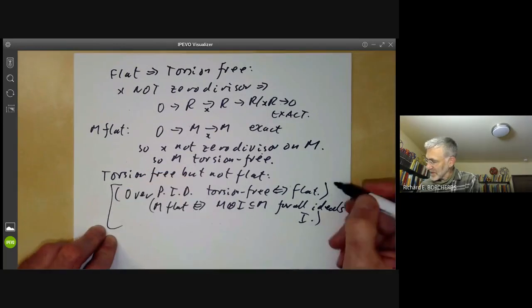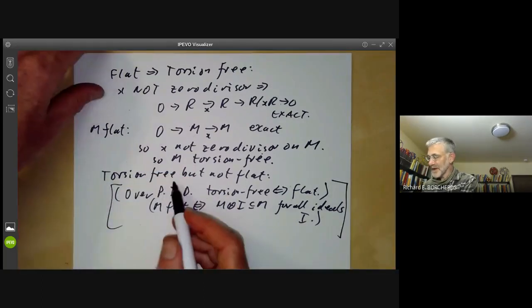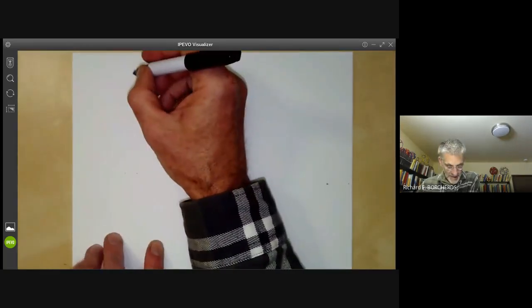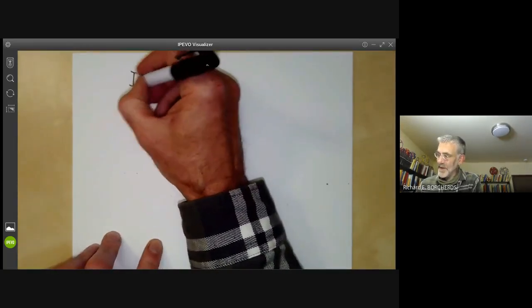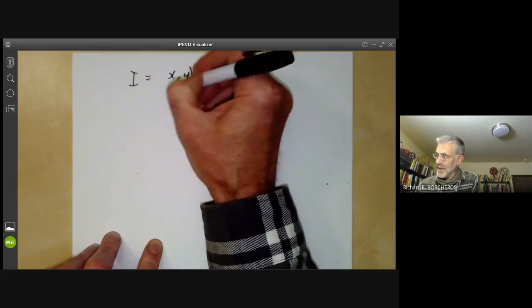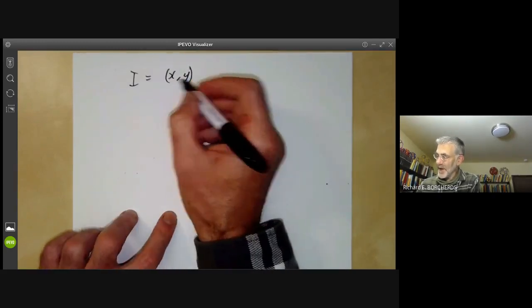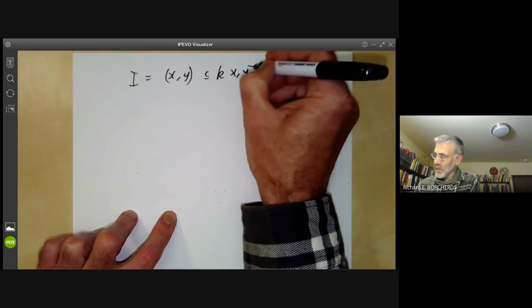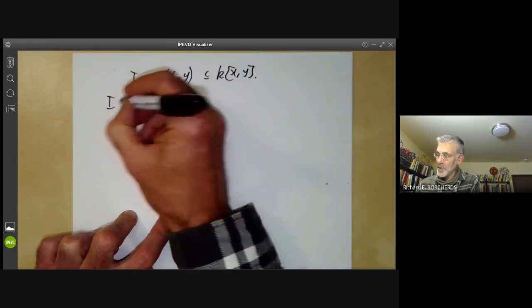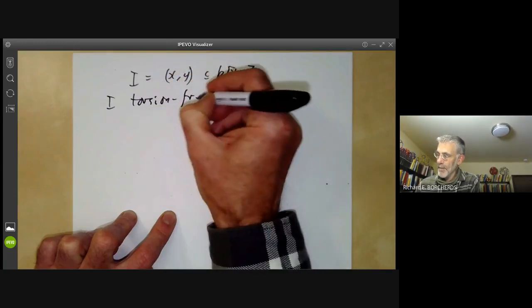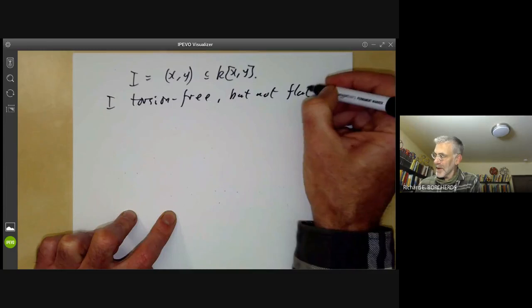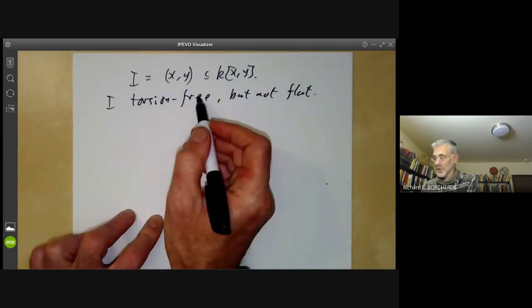Anyway, got a bit sidetracked. We're really trying to find an example of a module that's torsion-free but not flat. The simplest example is you take the ideal I to be generated by X and Y in the ring of polynomials K[X,Y]. Then I is torsion-free but not flat.